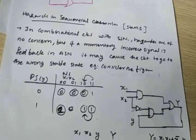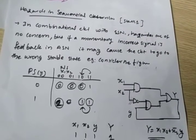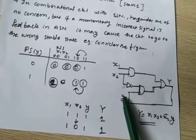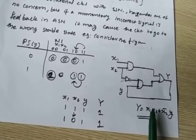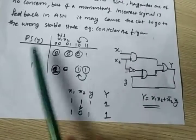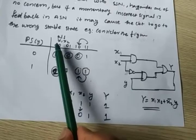In an asynchronous sequential network, a hazard may cause the circuit to go to a wrong stable state. Consider this circuit and its state table. The equation is: next state Y equals x1·x2 plus x2bar·y, where y is the present state. So this is the state table.